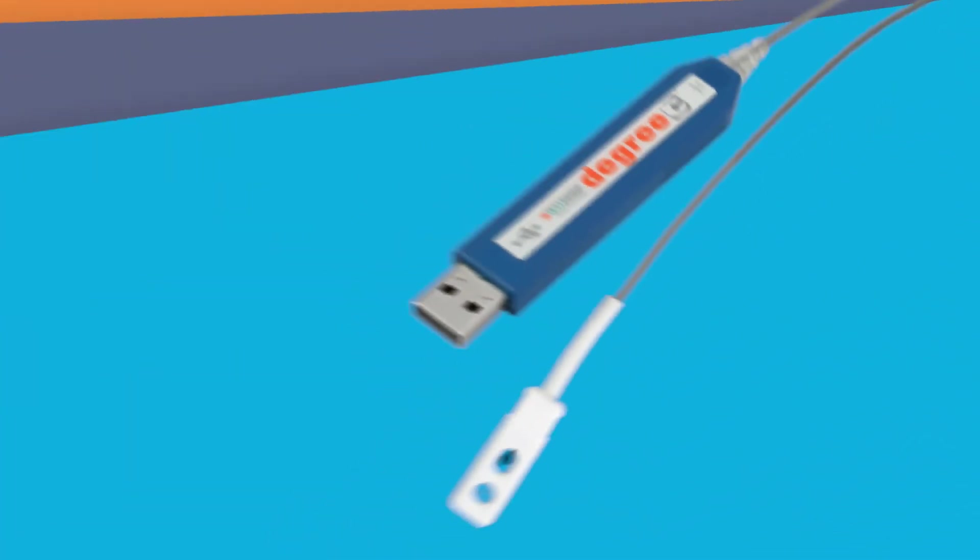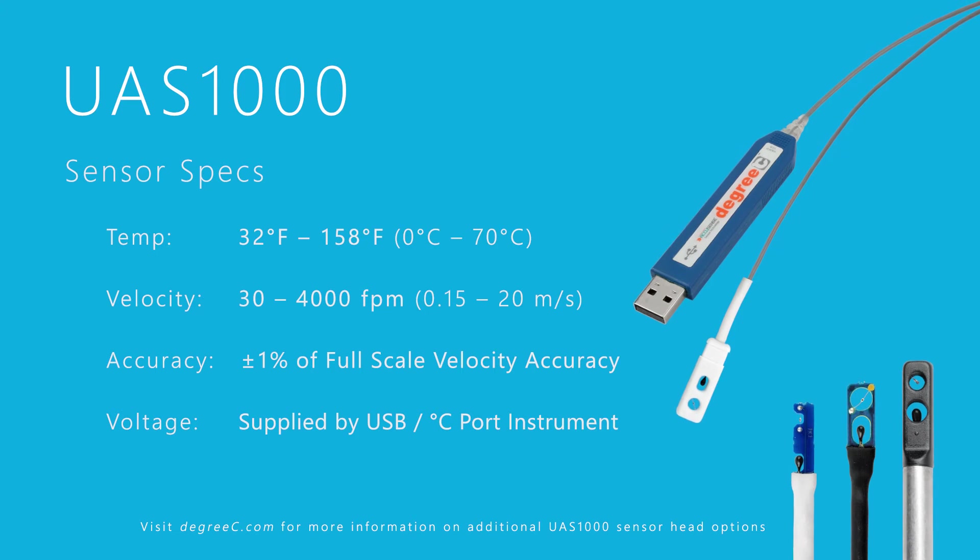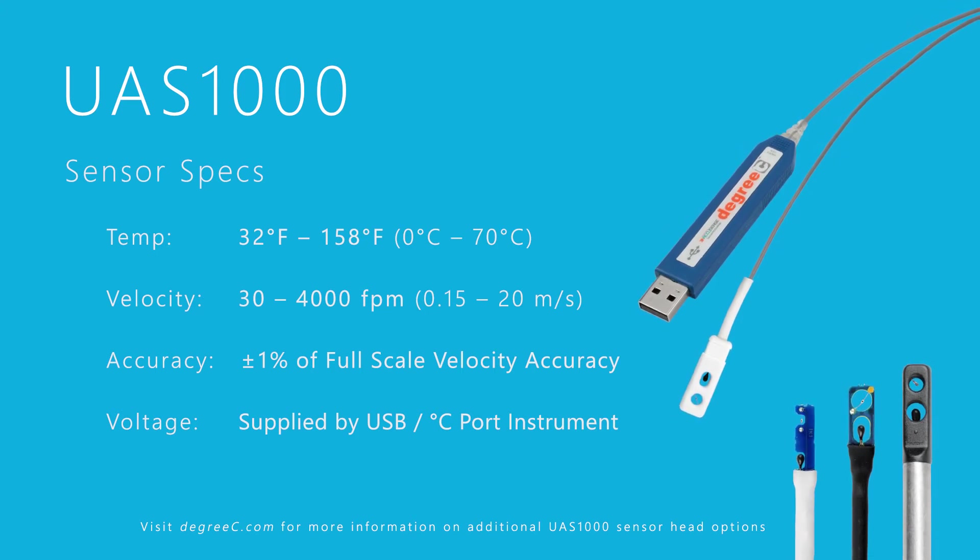Measure air velocity and temperature in hard-to-reach areas or densely populated electronic enclosures with the UAS-1000 miniature head designs.